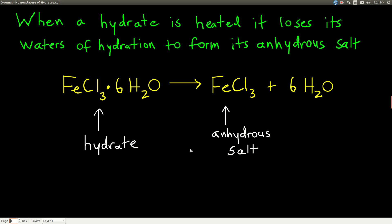When you heat hydrates up, the water molecules leave — they become steam. It looks like smoke, but it's really just steam coming off. This equation shows that on the left-hand side of the arrow we have the hydrate. The dot means the water molecules are interspersed and stuck to the ionic compound. The plus sign means they're separate — this is the anhydrous salt, the ionic compound without the waters of hydration, and these are the waters of hydration that have left.